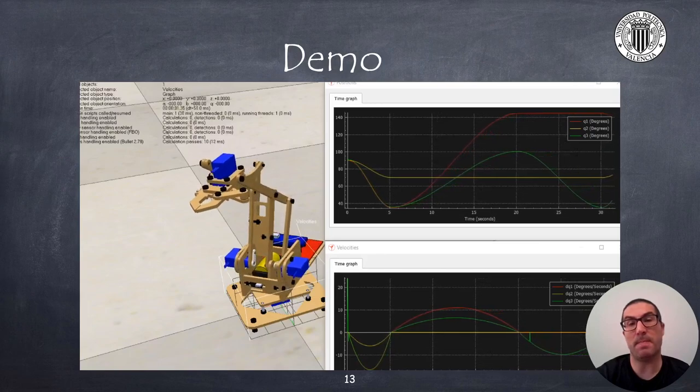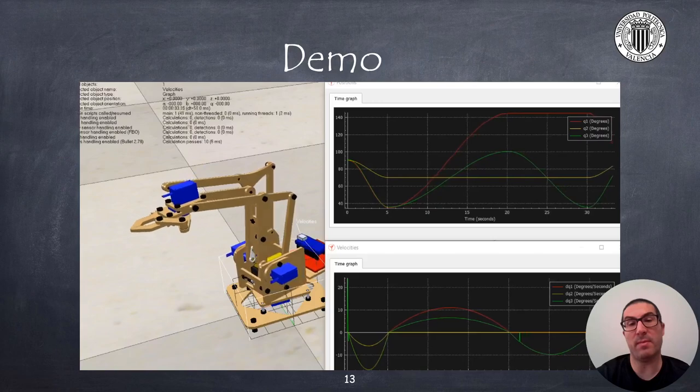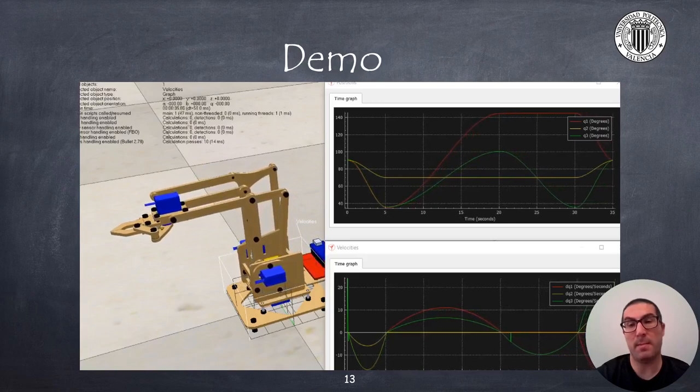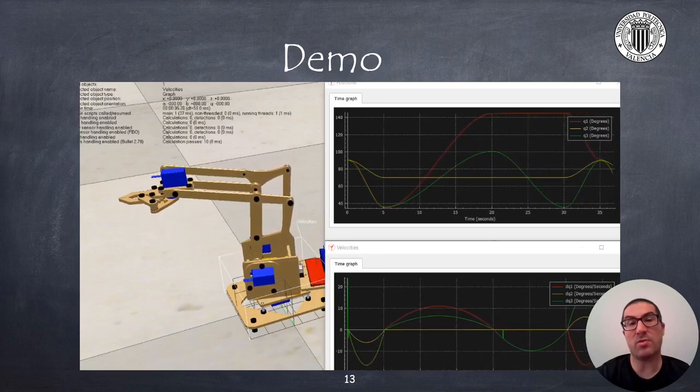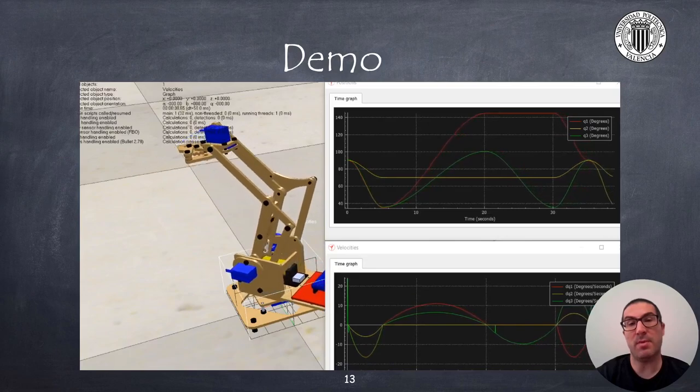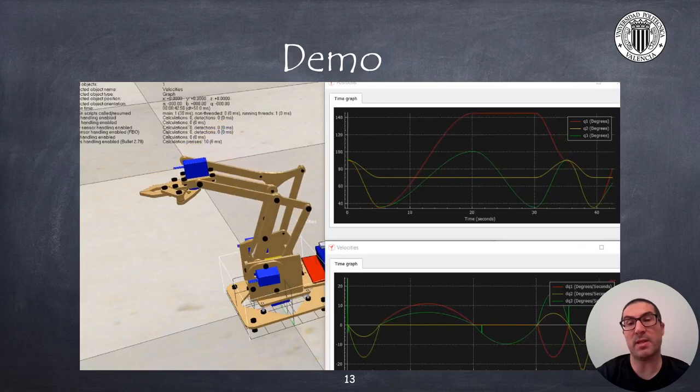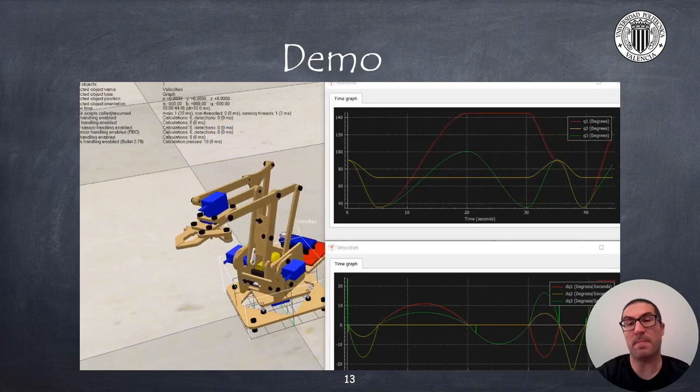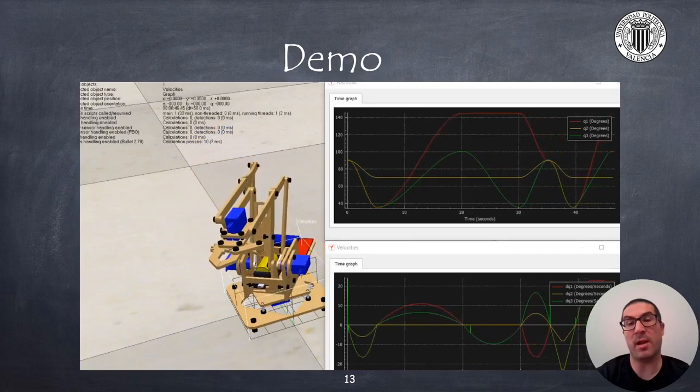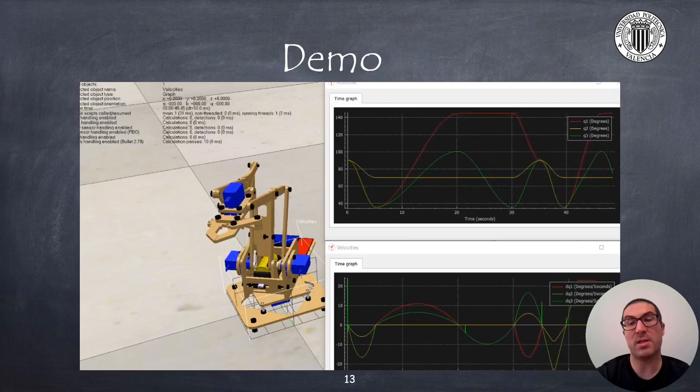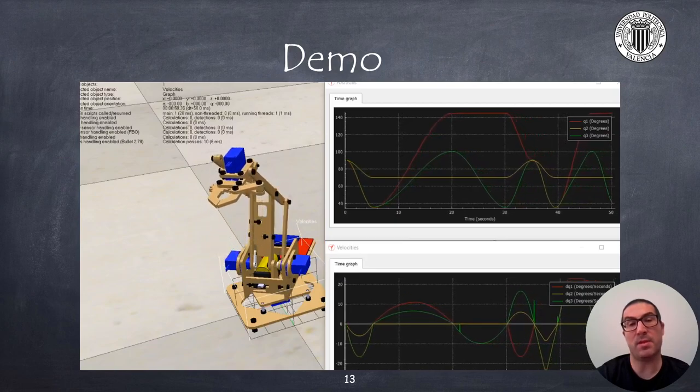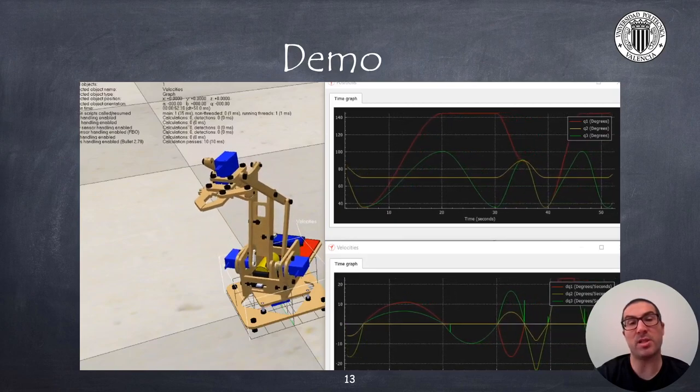As you can see, the trajectory profile of the velocity is quadratic. But now it's actually trying to reach the same target configurations, but in this case using the function provided by the RML library. Please take a look at the trajectory profile of the velocities to see the difference.